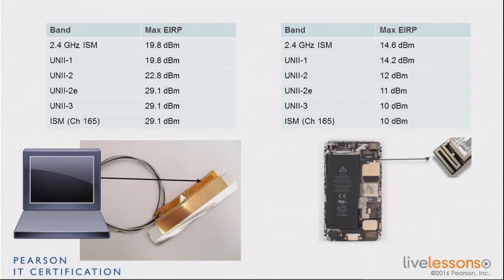So from one device to the other, depending on how it was made, what it was made of, its form factor, what kind of battery it has, will have varying performances in terms of Wi-Fi. This is important because when we talk about site survey in Module 3, we'll say that you should always design for the weakest of all your devices.